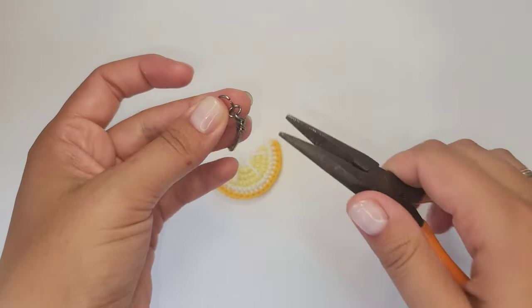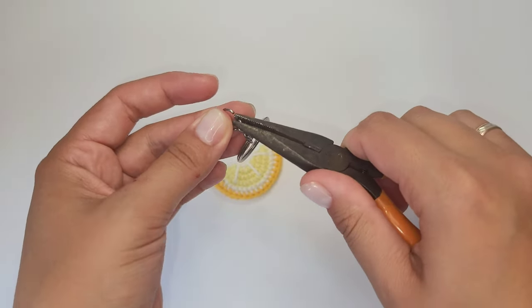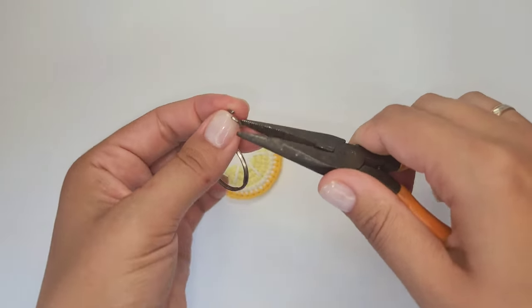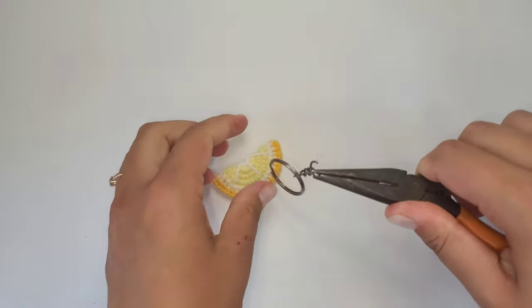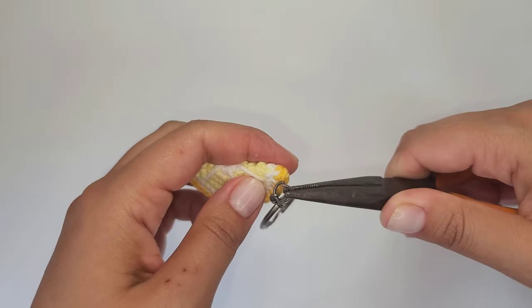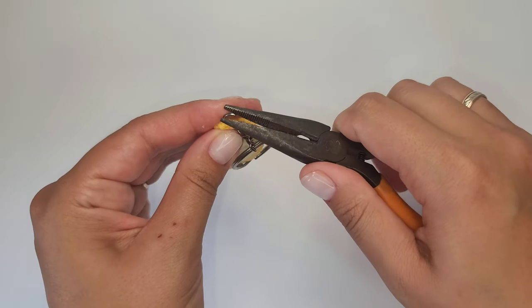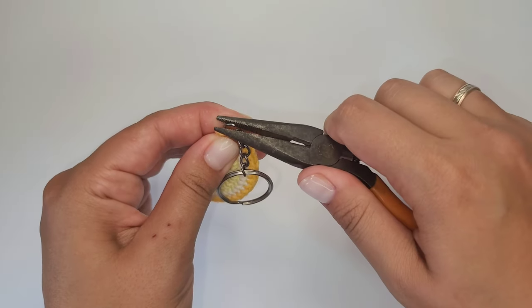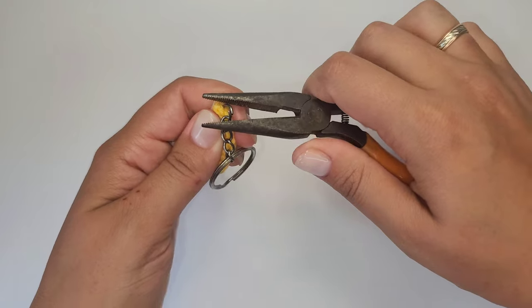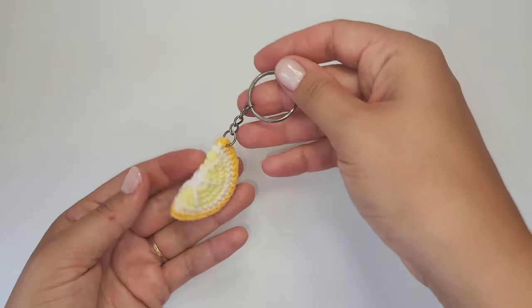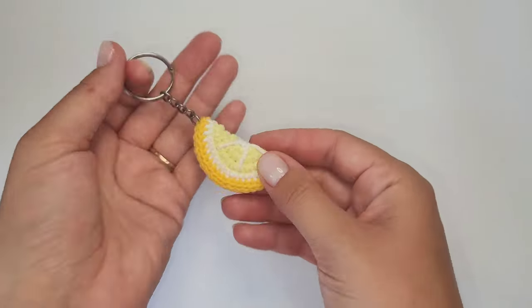Use pliers to attach a keychain basis to the lemon slice. Finally, your keychain is ready. Hope you've enjoyed crocheting it. Thanks for watching and I would really appreciate it if you follow my channel, like and comment. Thank you.